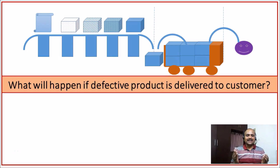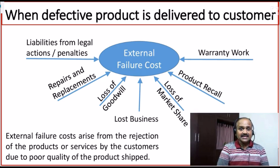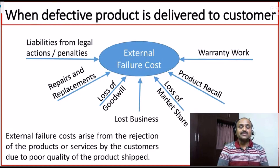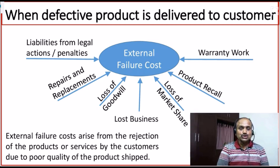Let us first understand what will happen if a defective product is delivered to the end customer. We experience liabilities from legal actions or penalties from the customer end. They may invoke the service level agreement against us, wherein we, the organization, are supposed to pay some amount to the customers. Or, in another scenario, we are supposed to pay for repairs and replacements.